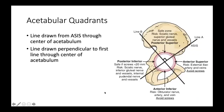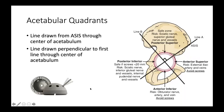The acetabulum can be divided into quadrants by taking one line from the ASIS through the center of the acetabulum and another line perpendicular through the center. This gives four quadrants, which is important for procedures like hip replacement or fracture fixation requiring screws. The safe area for screw placement is the posterior superior quadrant.